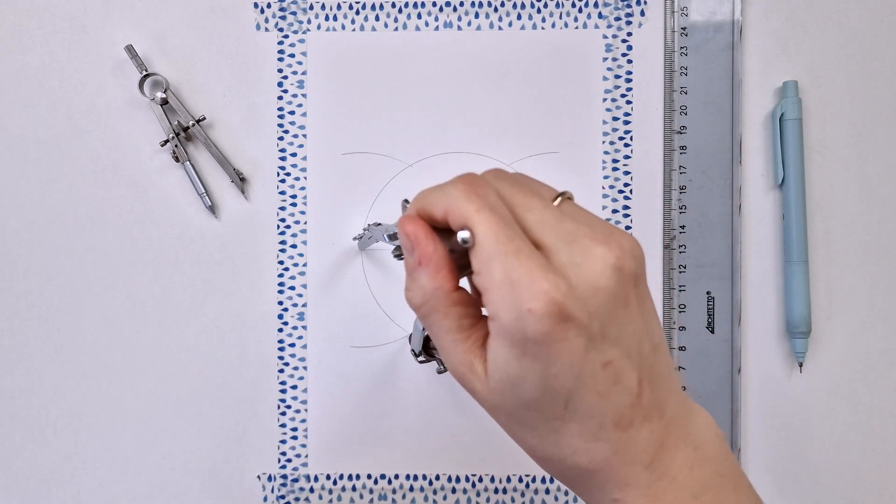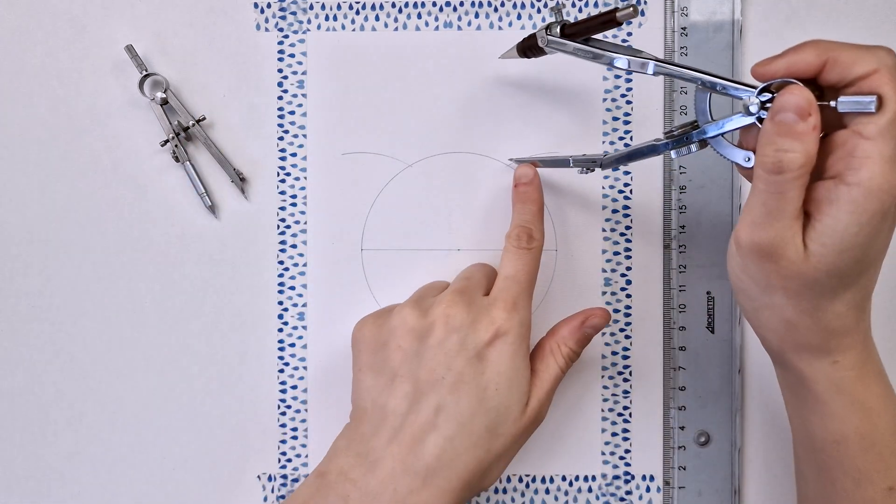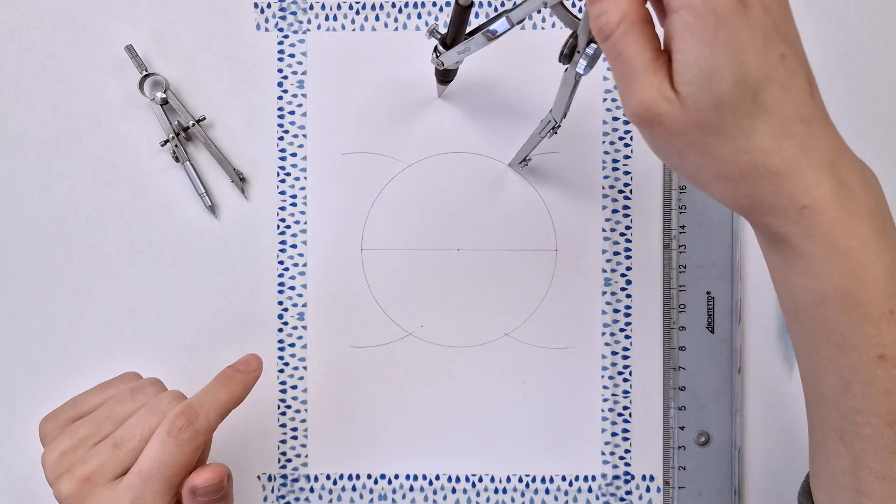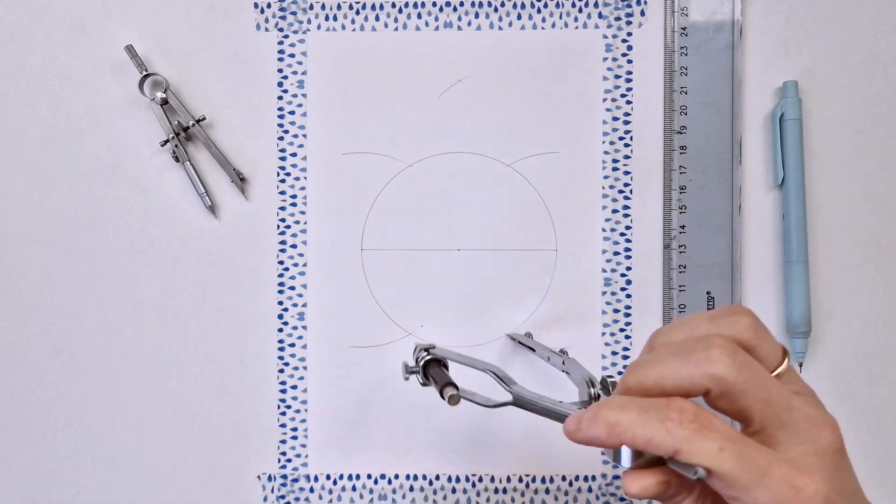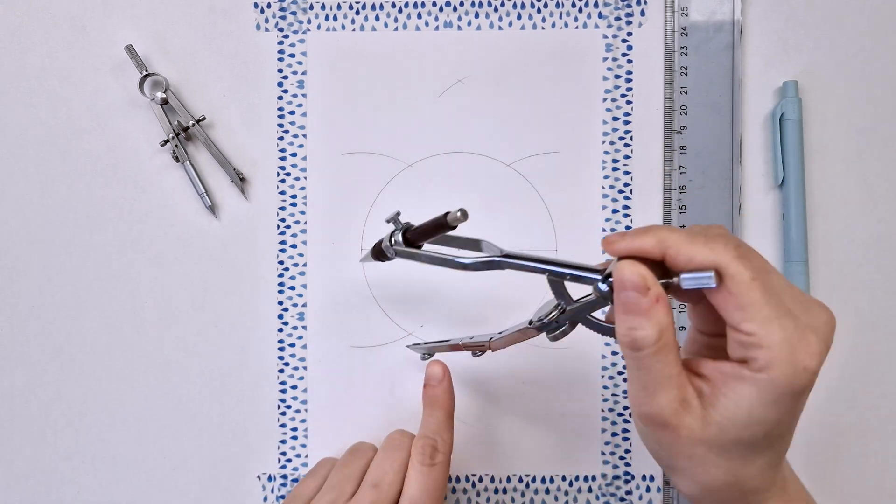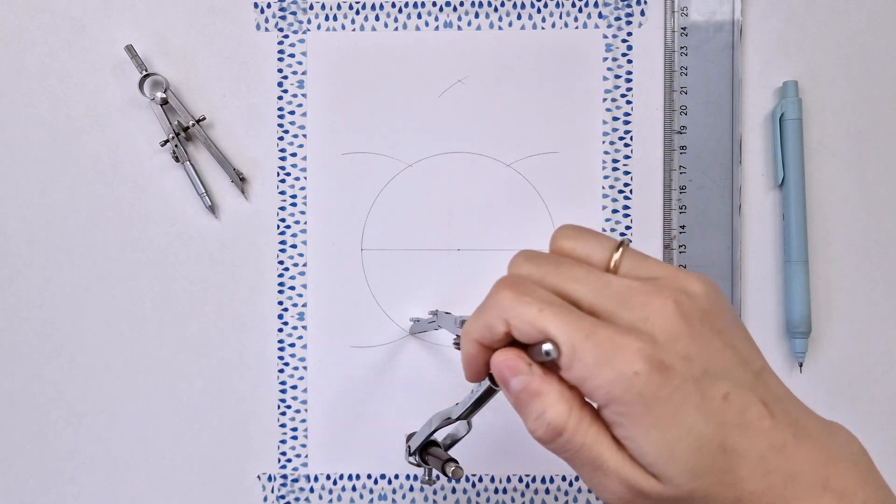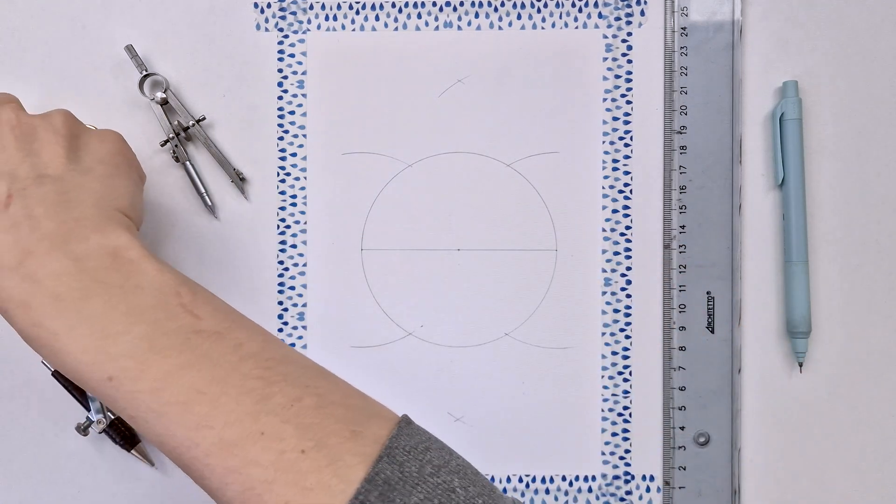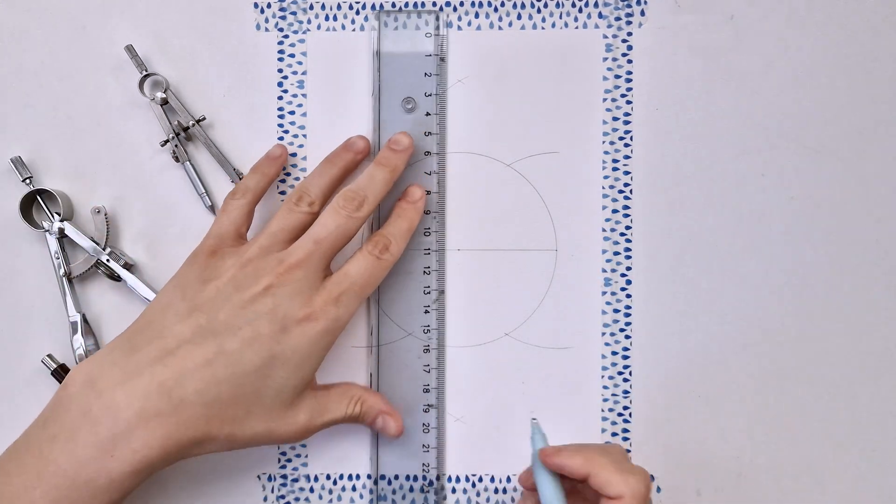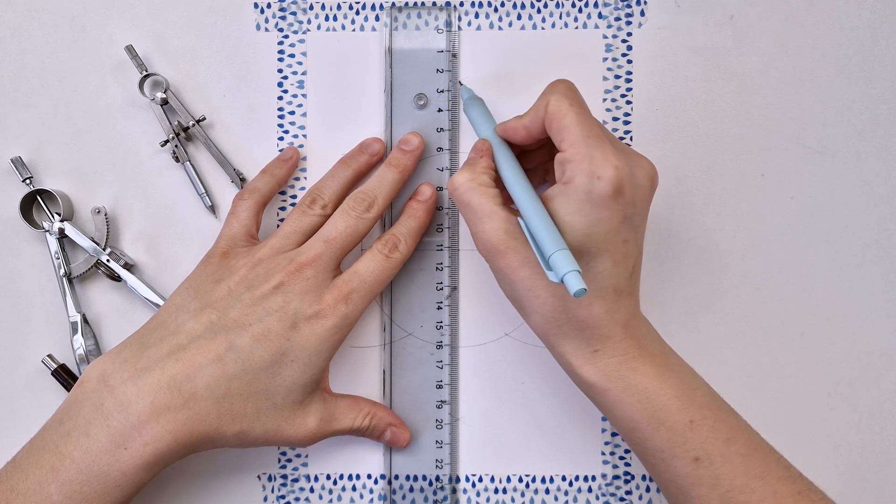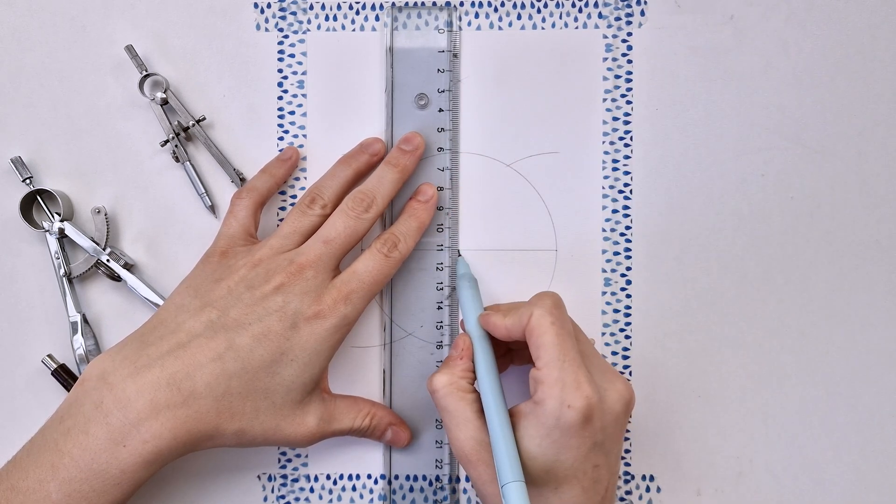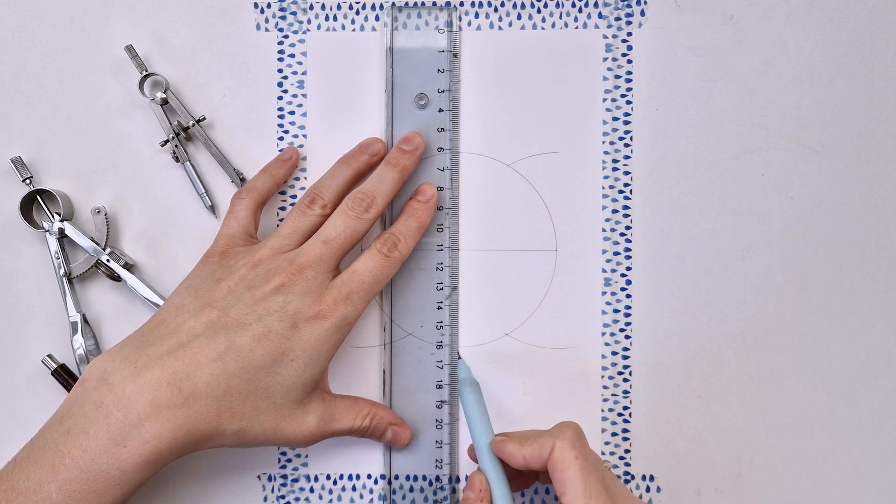These marks intersect with the main circle, so I'll use those intersections to make another four marks, two at the top and two at the bottom. From the intersection of those marks I can create the vertical line, just aligning my ruler to them and making sure my line passes through the center of the circle as well.